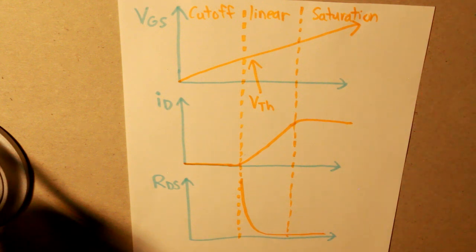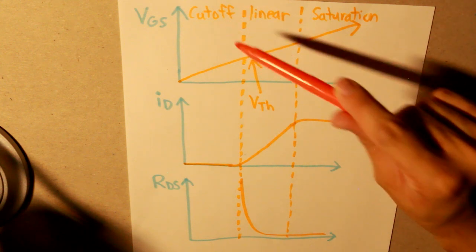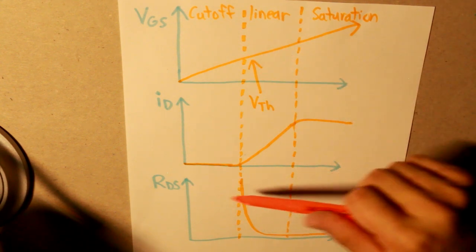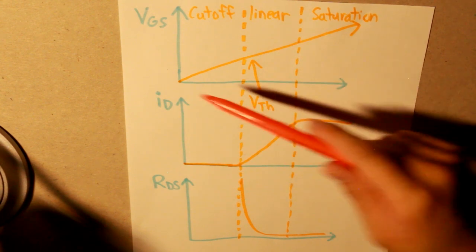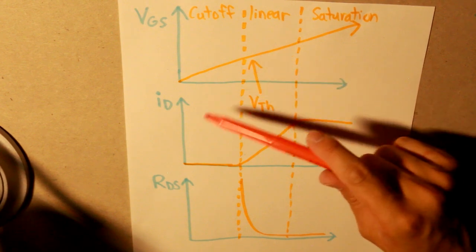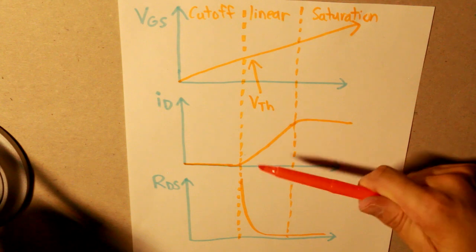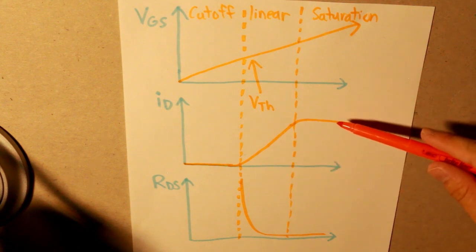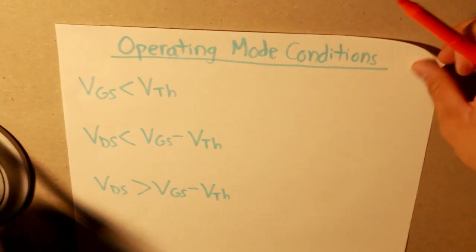So, how do we apply this mathematically, understanding the three modes, the cutoff, where the current is not flowing at all, linear, where the current is steadily increasing depending on the rate of change of the voltage between the gate and the source, and the saturation mode when the current is not changing at all. Well, very simple.